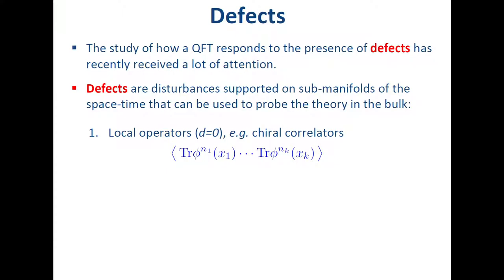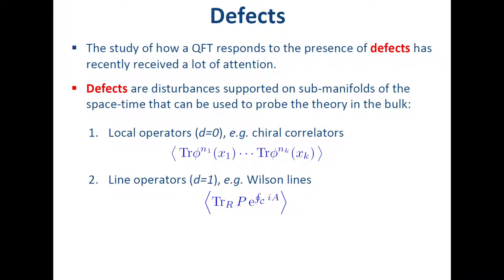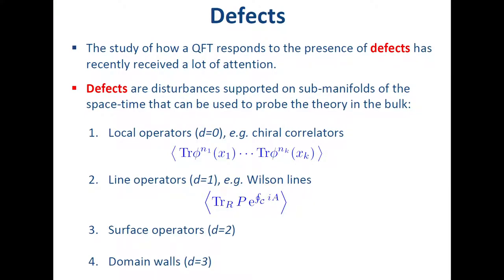Perhaps the simplest example of a defect is a point-like operator, a zero-dimensional defect localized at a point. If we put many of these defects in space-time, we can get information about the theory by considering the correlation functions. A one-dimensional generalization is a line operator, like the Wilson lines discussed in this workshop yesterday. Surface operators are the two-dimensional generalizations of these, and we can even think about three-dimensional generalizations, domain walls. In a theory in four space-time dimensions, this list is exhaustive. In my talk, I will concentrate on surface operators.